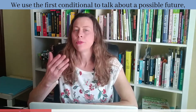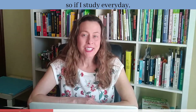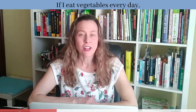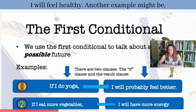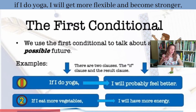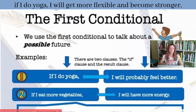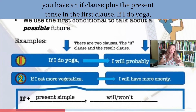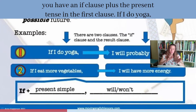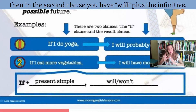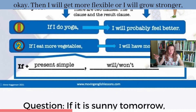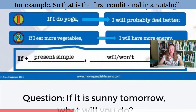Let's talk about the first conditional. We use the first conditional to talk about a possible future. For example: if I study every day, I will pass the exam; if I eat vegetables every day, I will feel healthy; and if I do yoga, I will get more flexible and become stronger. Notice the structure: in the first clause you have an 'if' clause plus the present tense, and in the second clause you have 'will' plus the infinitive — I will get more flexible, I will grow stronger. That is the first conditional in a nutshell.